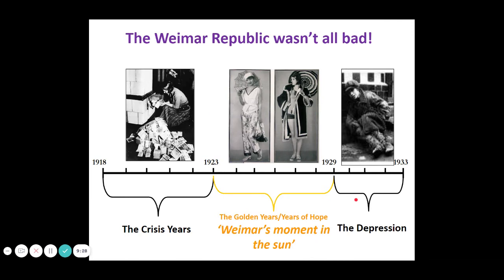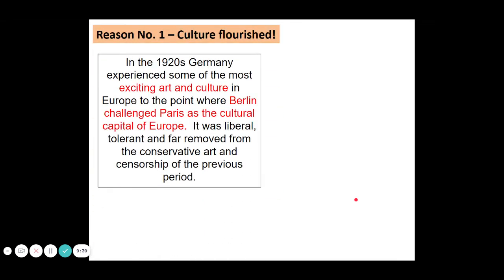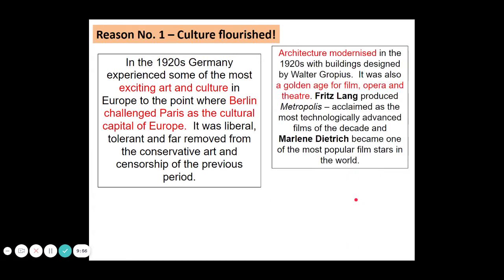Then from 1923 to 1929, we enjoy the golden years — the Weimar Republic's moment in the sun — where things begin to significantly improve. This is largely due to the work of Gustav Stresemann in arranging American loans. These American loans allow Germany to get back on its feet. In the 1920s, there's a huge explosion in art and culture. There's an architecture movement called the Bauhaus School led by Walter Gropius. There are amazing films like Fritz Lang's Metropolis, the most technologically advanced film of its time. We've got famous actors like Marlene Dietrich, famous all around the world.